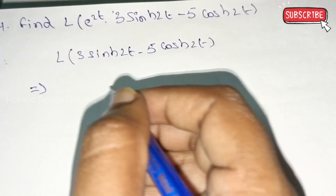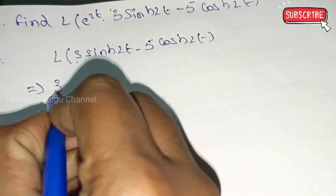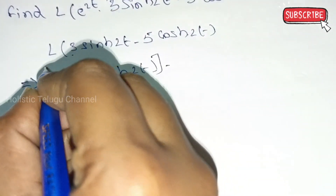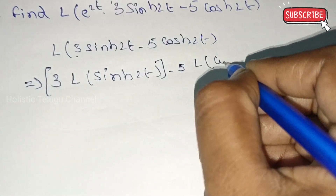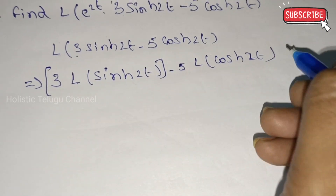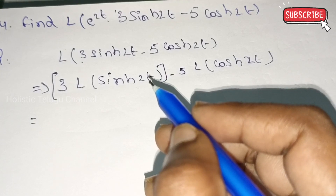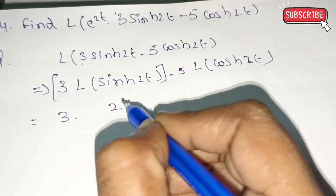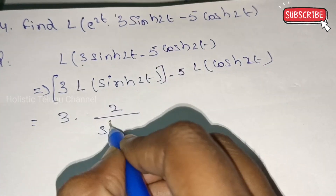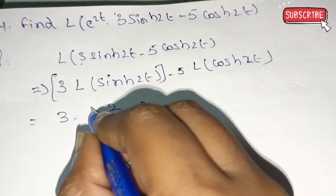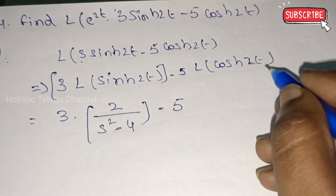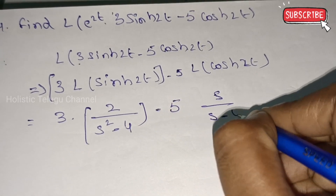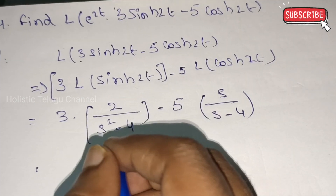Now we will apply the Laplace transform of sinh(2t) and cos h2t. Laplace transform of sinh(2t): the formula is 2 by (s² minus a²), so s² minus a² equals s² minus 4. For minus 5cosh(2t), the formula for cosh(2t) is s by (s² minus a²), where a² equals 4. So 3 twos give us 6.